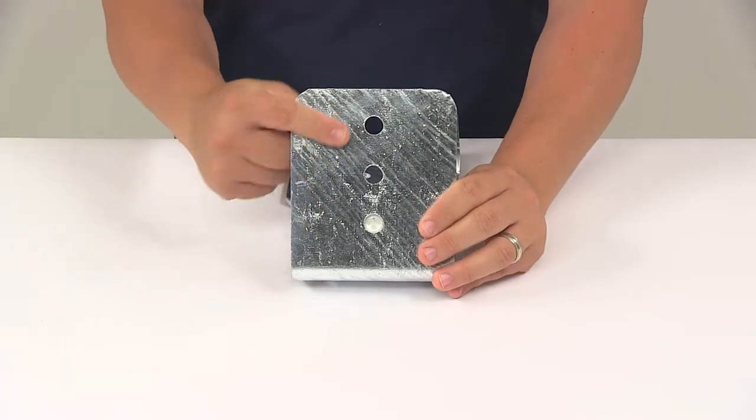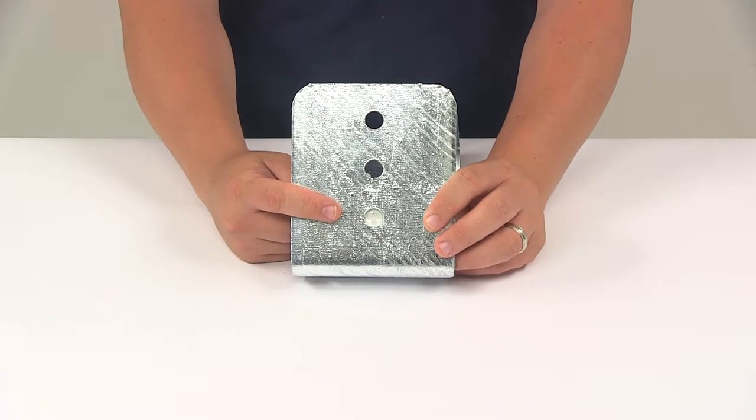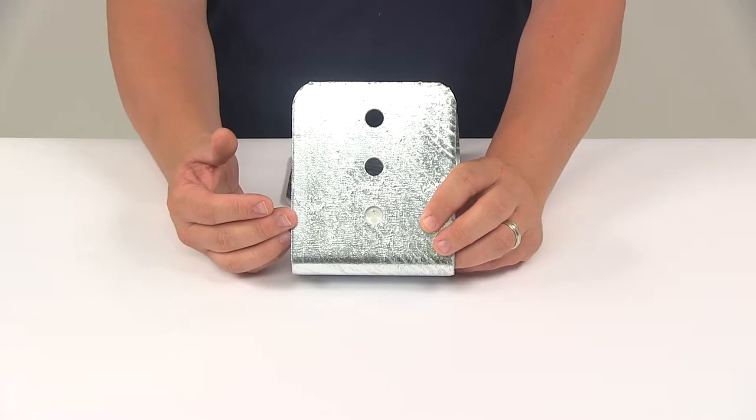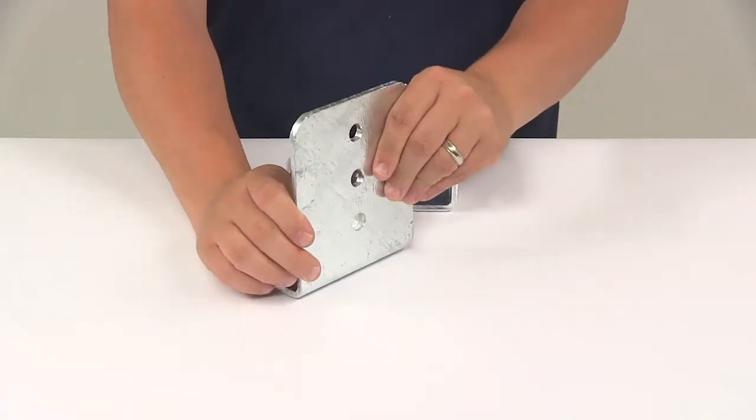You're going to have three pre-drilled holes on each bracket. That's going to let you raise or lower the bunk board during your installation. And then you can secure the board vertically on its side between the brackets with a half inch bolt. That's going to be sold separately as well.